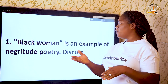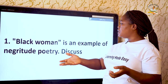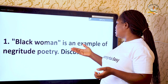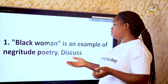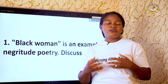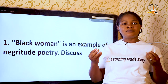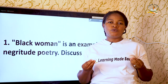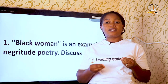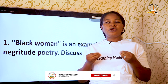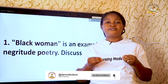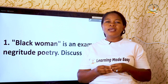Here is the first question: 'Black Woman is an example of negritude poetry — discuss.' First of all, let's talk about the poem 'Black Woman,' written by Léopold Sédar Senghor. Senghor is one of the freedom fighters of Africa.